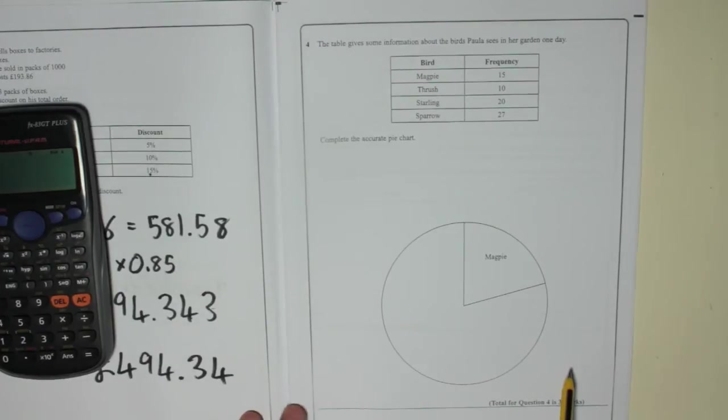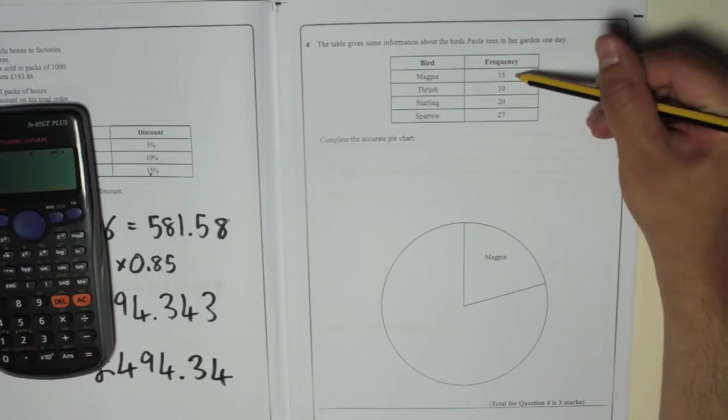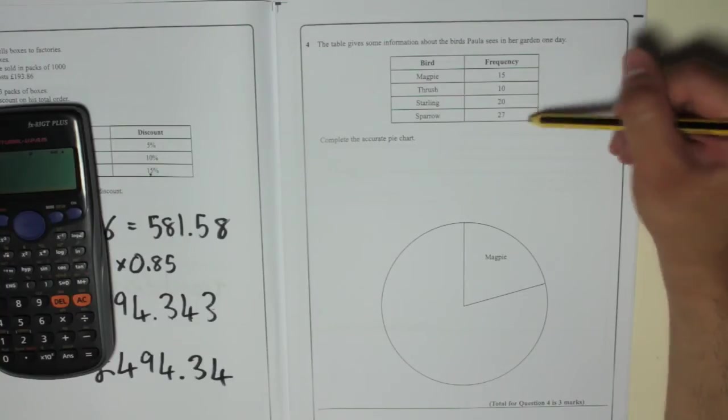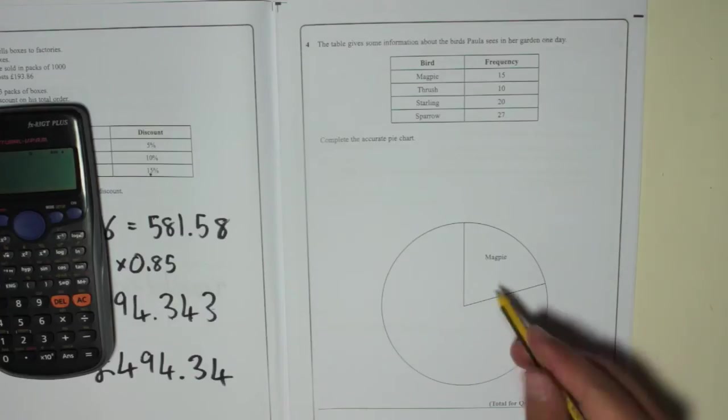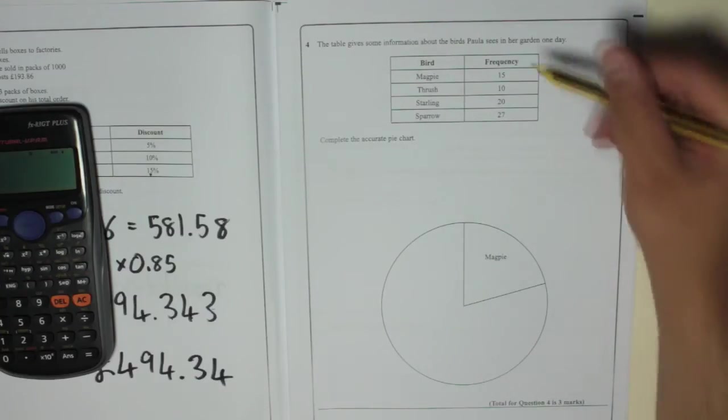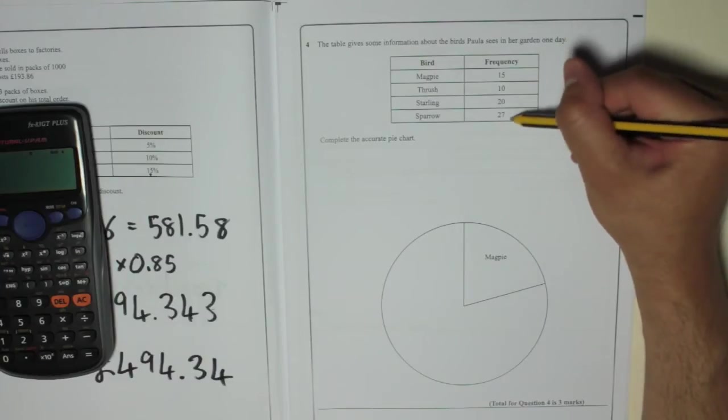What we need to do is work out how many degrees each one of these, every bird is worth, so each group is worth. Remember, in a pie chart you've got 360 degrees. Work out how many birds she's seen first of all.